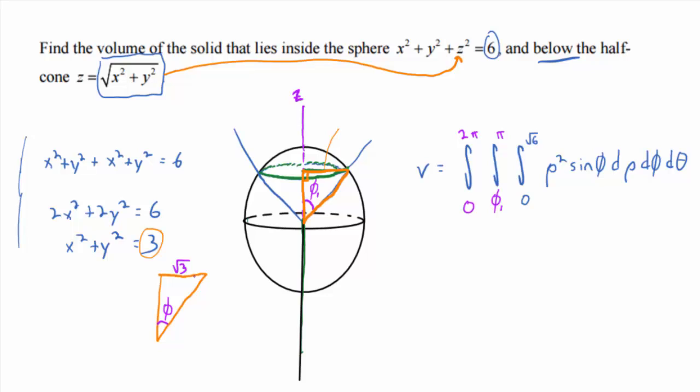And then, oh, I know the hypotenuse. What's the hypotenuse? It's the radius of the sphere, which is root 6. Do you remember SOH from trigonometry? What does the SOH part stand for? S-O-H. Sine equals opposite over hypotenuse.